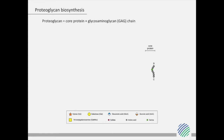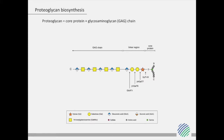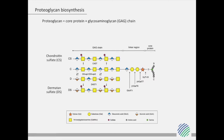Proteoglycans consist of a core protein covalently attached to a glycosaminoglycan chain via a tetrasaccharide linker region. The alternating addition of GalNAc and glucuronic acid commits the nascent glycosaminoglycan chain to chondroitin, and subsequent sulfation of the GalNAc residues results in the formation of chondroitin sulfate. Alternatively, the glucuronic acid residues can be epimerized to iduronic acid by two dermatan sulfate epimerases, followed by GalNAc sulfation in order to form dermatan sulfate. Both dermatan sulfate epimerases and dermatan sulfotransferase are crucial for proper dermatan sulfate biosynthesis.